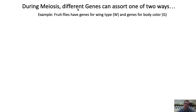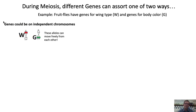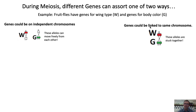Hey, bio team. So you guys have learned that during meiosis, different types of genes have two ways that they can assort themselves. For example, fruit flies have separate genes for wing type and genes for body color. During meiosis, it's possible that the genes could be on independent chromosomes, able to move freely from each other, but it's also possible that the genes could be linked to the same chromosome.